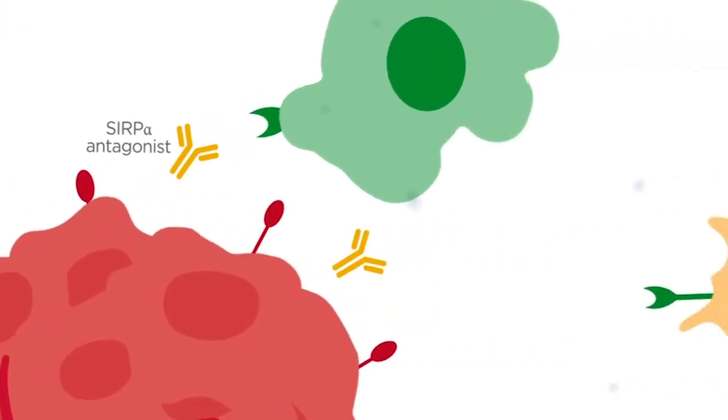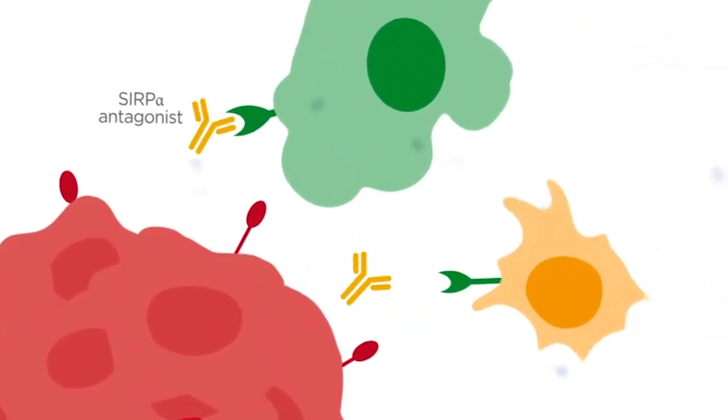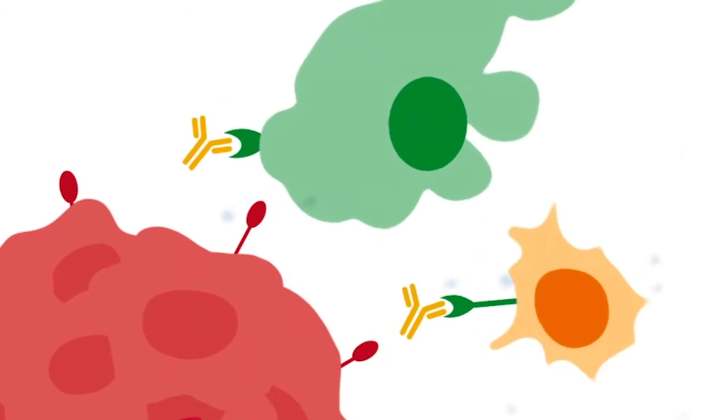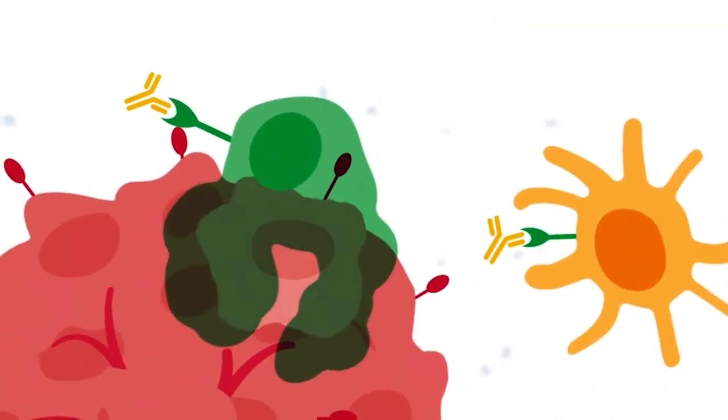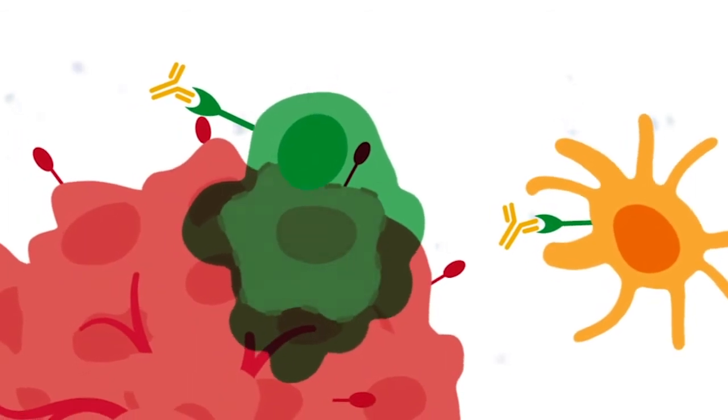A SIRPα antagonist blocks the interaction between SIRPα and CD47, reversing the inhibitory signals and reactivating the immune functions of macrophages and dendritic cells.